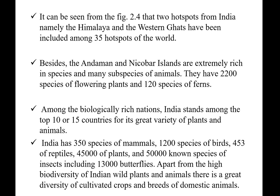Among biologically rich nations, India stands in the top 10 to 15 countries for its great variety of plants and animals. India has 350 species of mammals, 1,200 species of birds, and 13,000 species of butterflies. Apart from the high biodiversity of wild plants and animals, there is great diversity of cultivated crops and breeds of domesticated animals.